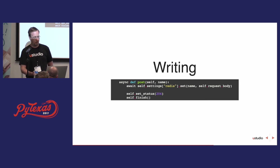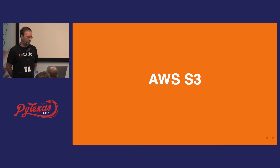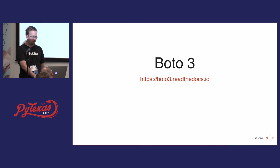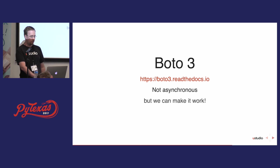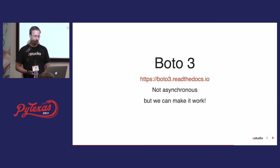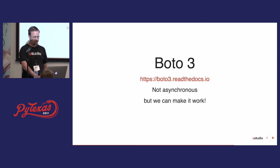We're calling set and awaiting the result. Some of you may have used AWS S3. You've probably used Boto3, but unfortunately it's not asynchronous. There are asynchronous alternatives — the AIO Libs organization has a package called AIO Boto Core with partial support for some AWS services including S3. But I wanted to use Boto3 to show you how to make this work.